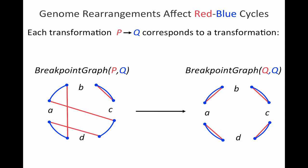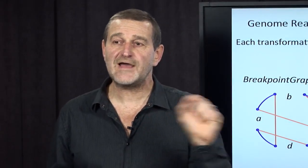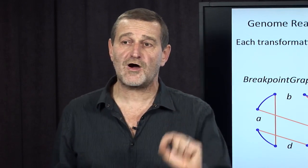So, an important thing to realize is that genome rearrangements affect red-blue cycles. Every two breaks makes its mark on the breakpoint graph. And we know that starting from the breakpoint graph between genome P and Q, doesn't matter what series of rearrangements nature takes, the end will be the breakpoint graph of two identical genomes.